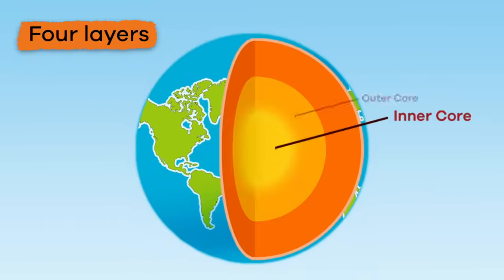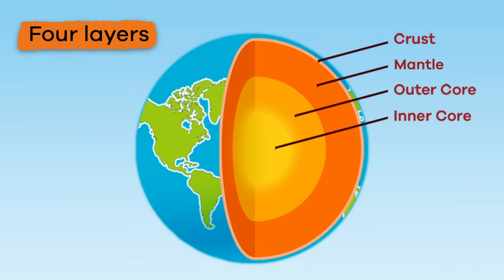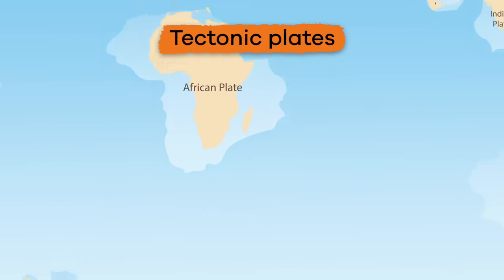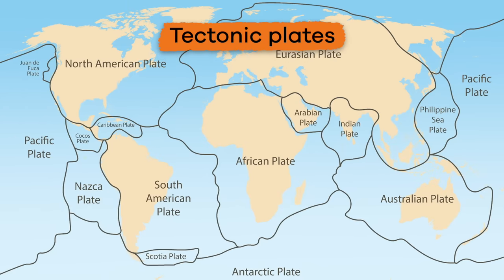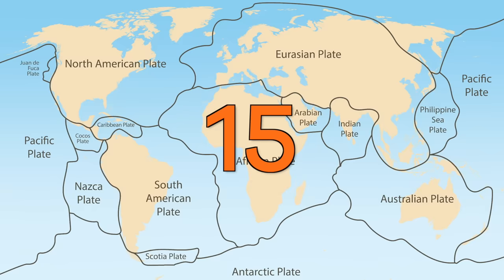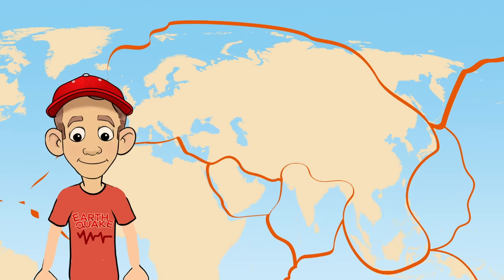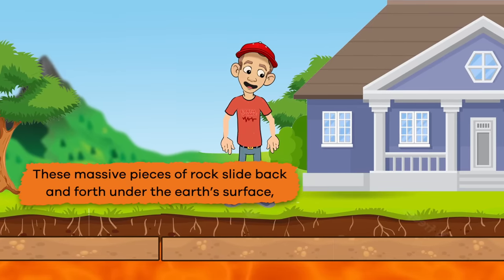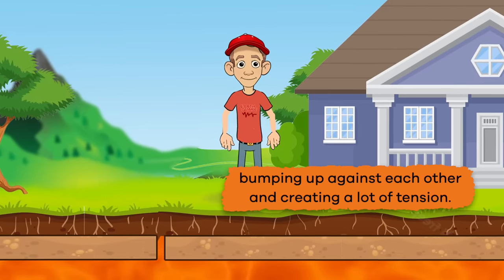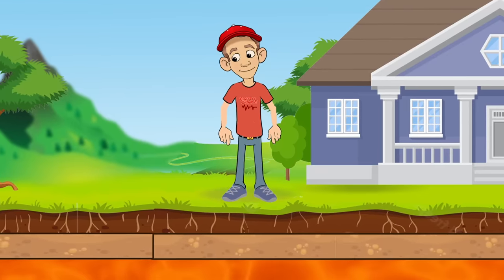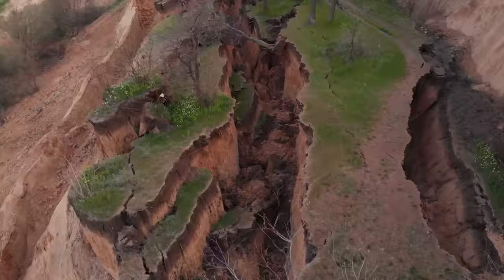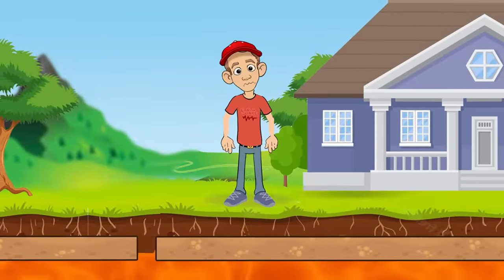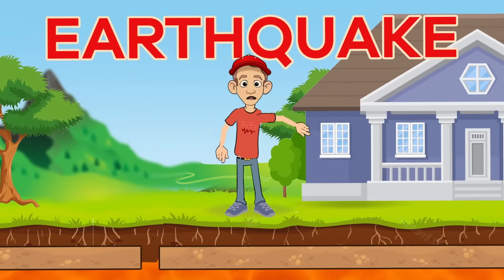The earth has four major layers: inner core, outer core, mantle, and crust. Think of the crust and top of the mantle like the skin of the earth. This skin is made up of different pieces of rock called tectonic plates. There are about 15 major slabs that join together kind of like a puzzle. The edges around the tectonic plates are called plate boundaries. These massive pieces of rock slide back and forth under the earth's surface, bumping up against each other and creating a lot of tension. This tension and movement create faults, which are basically huge cracks in the rock.